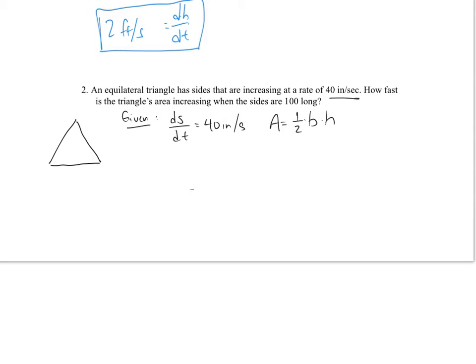We're also given that when the sides are 100 inches long is when we want to evaluate. This is the height of our triangle, and these sides are each changing at a rate of 40 inches per second.